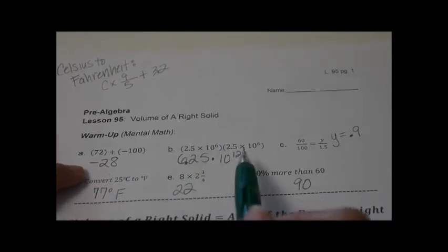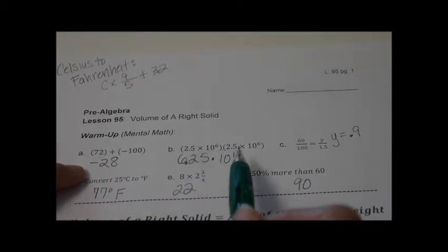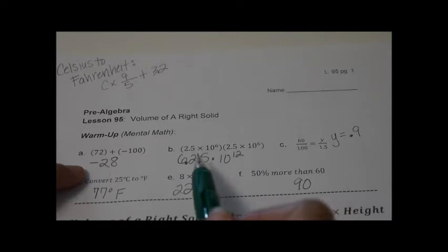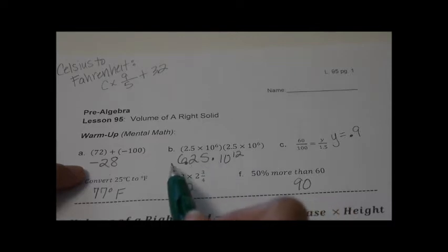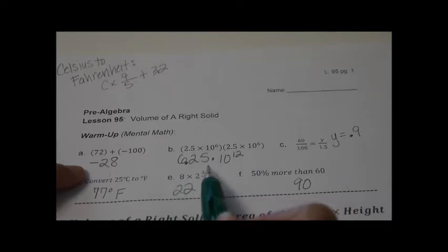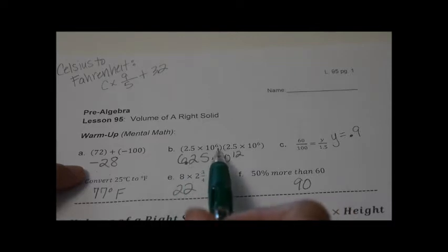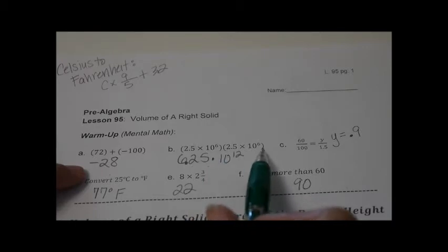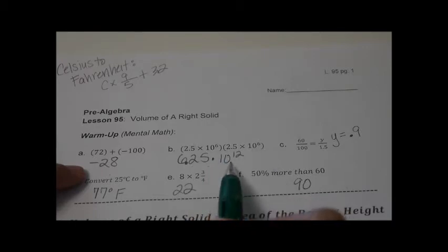25 times 25 is 625, so now let's put two decimal places in there, so we have 6.25. And then we have 10 to the 6 plus 6, which is 10 to the 12th.